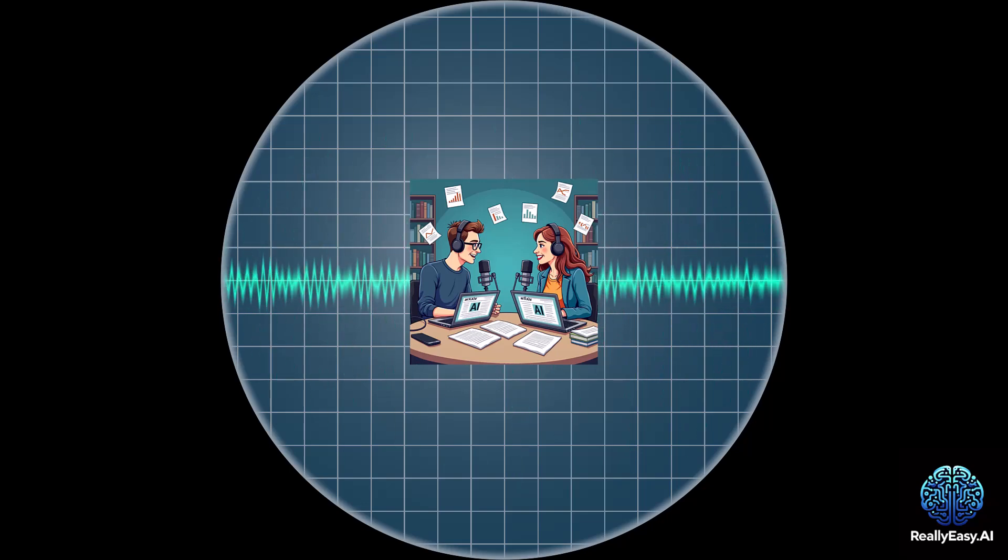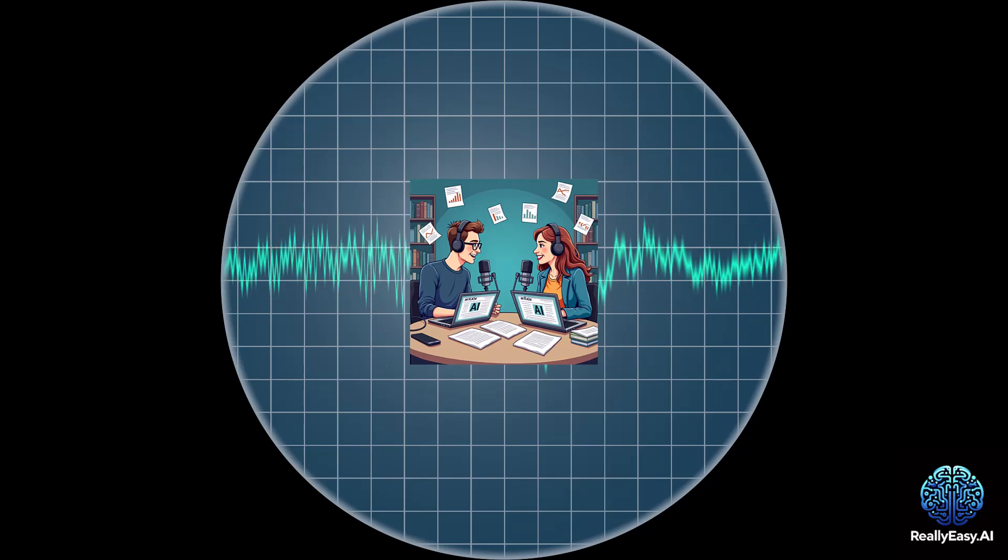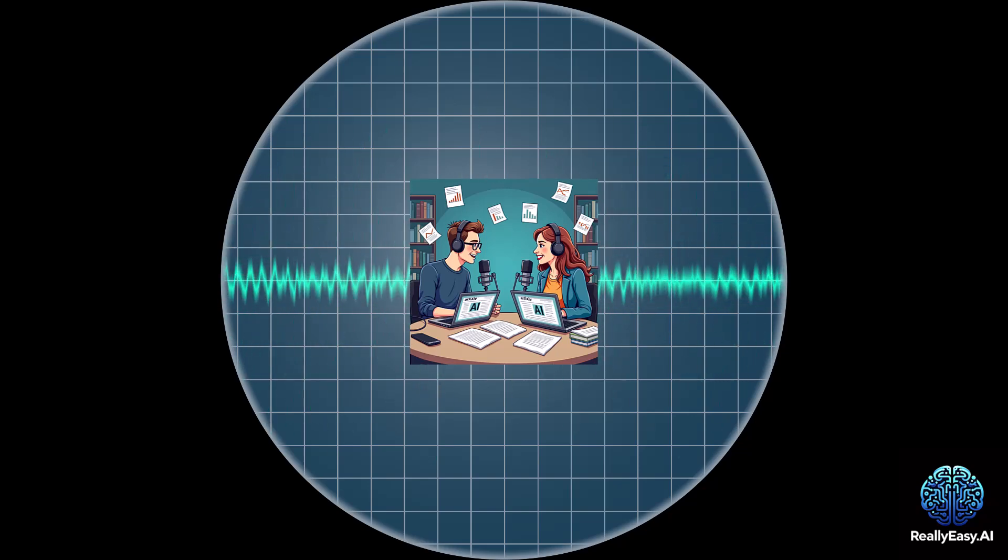It's essentially a virtual scavenger hunt where the AI has to navigate a city using instructions. So it's like a GPS for AI. In a way, yes. But they make it more challenging by using different types of instructions. Sometimes they give absolute directions like go north for two blocks. And other times they use relative directions like turn left at the next intersection. Is it just text-based or does the AI actually get to see the city? VIRL actually has both text-only and visual versions. In the visual version, the AI is presented with realistic street view images.